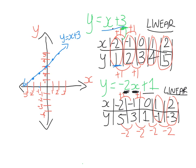Now I'll draw the second line, y equals minus 2x plus 1, in green. Plot the points: minus 2 comma 5, minus 1 comma 3, 0 comma 1, 1 comma minus 1, and 2 comma minus 3. The points lie in a straight line. Join them up with arrows on each end and label it y equals minus 2x plus 1. The green line leans to the left because it has a negative gradient, whereas the blue line leans to the right because it has a positive gradient.